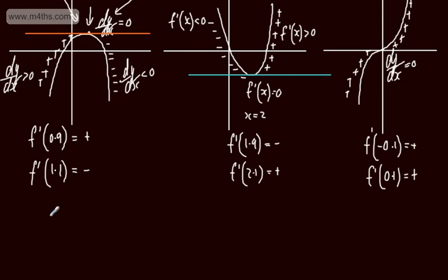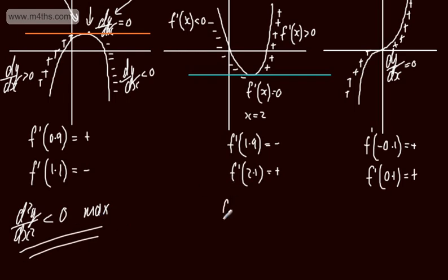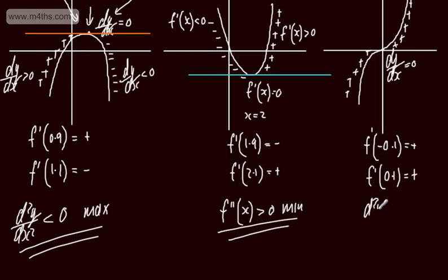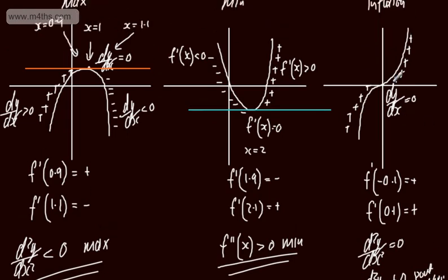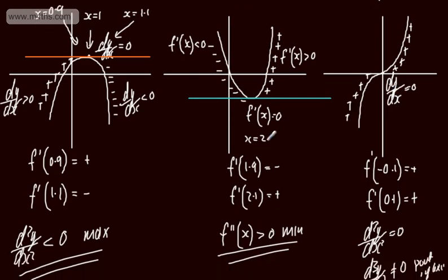The alternative was to take the second derivative. For a maximum, d²y by dx² is less than zero. For a minimum, f double dashed of x — which is the same as d²y by dx² — is greater than zero. Then for the scenario of a point of inflection, if d²y by dx² gives us zero we have two choices: we can take the third derivative, d³y by dx³, and if this is not equal to zero we have a point of inflection; or we can evaluate the gradient either side of the stationary point. That's a brief recap — we're now going to apply that to a couple of examples.